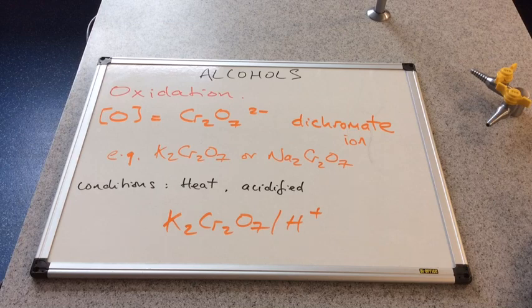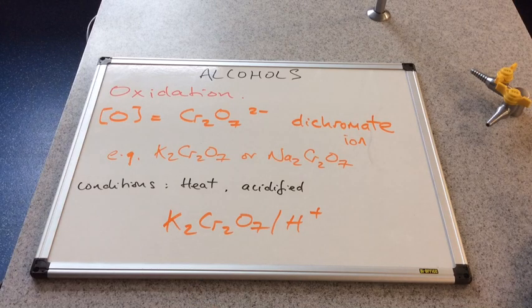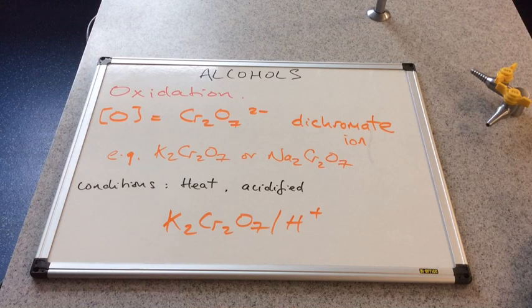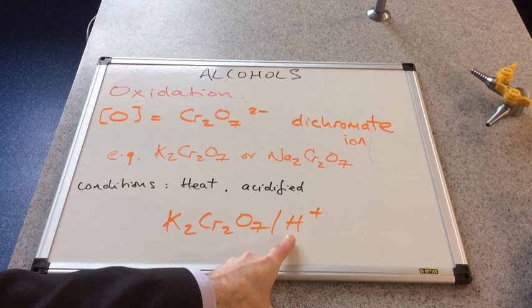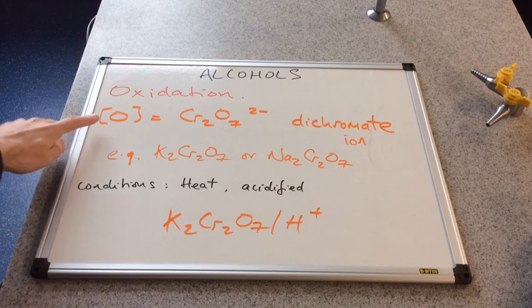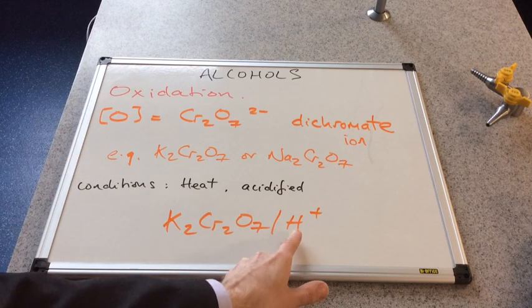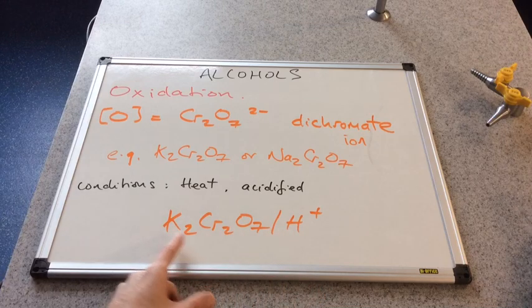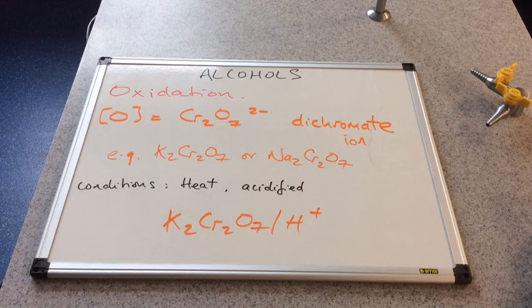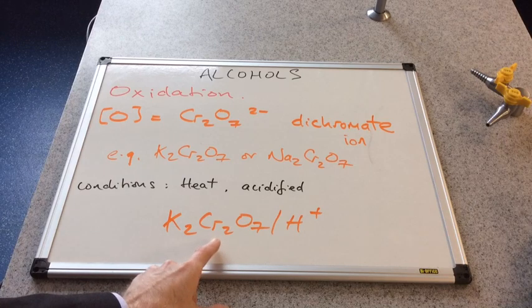The best way to think about the oxidizing agent is to remember one example, and the one that I always remember is potassium dichromate. This H+ here stands for those acidified conditions. So the oxidizing agent for the oxidation of alcohols is acidified potassium dichromate. I've deliberately used the orange pen because this chemical is orange.